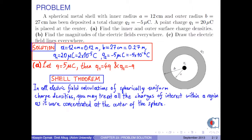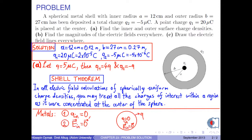Let us remember the Shell theorem, which states that in all electric field calculations of spherically uniform charge densities, you may treat all the charges of interest within a region as if they were concentrated at the center of the sphere. For metals, there is no charge inside the metal and all charges are distributed on the surface. Therefore, the electric field inside the metal is zero.